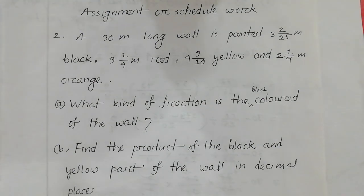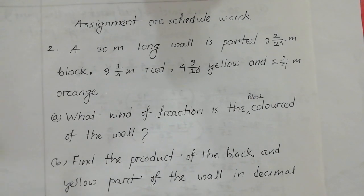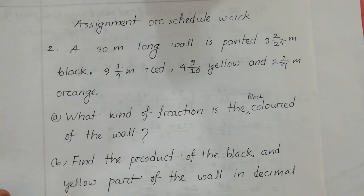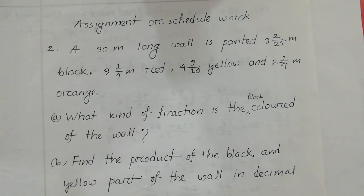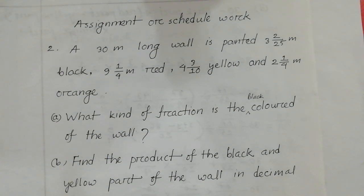The question says: a 10-meter long wall is painted — 3 and 2/25 meters black, 9 and 1/4 meters red, 4 and 3/10 meters yellow, and 2 and 1/4 meters orange. The question also involves 2/25 meters white and 1/24 meters red.